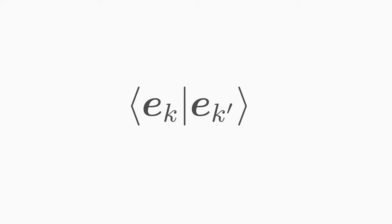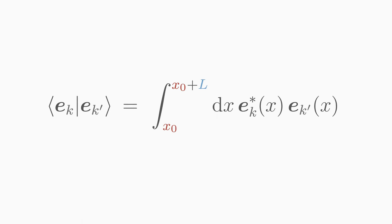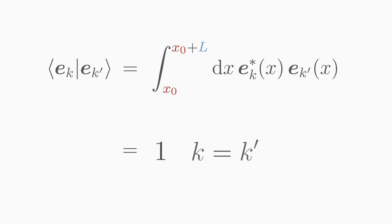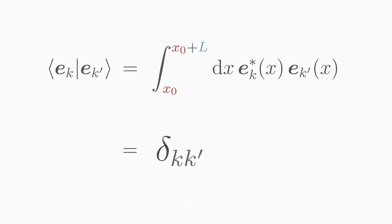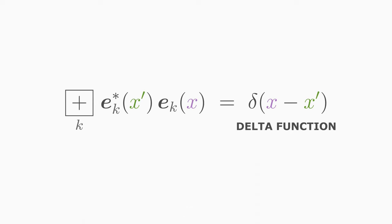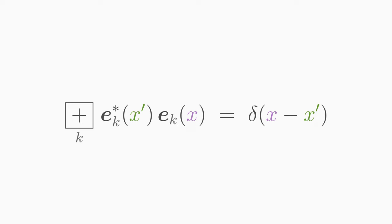Let's look at the first property of basis functions — orthonormality. We can check orthonormality by taking two basis functions with wave numbers k and k' and forming the inner product. For the two functions to be orthonormal, their inner product must yield 1 if k equals k' (i.e., the inner product of a function with itself), and must yield 0 if k is not equal to k'. We can combine both cases into one equation using a Kronecker delta.